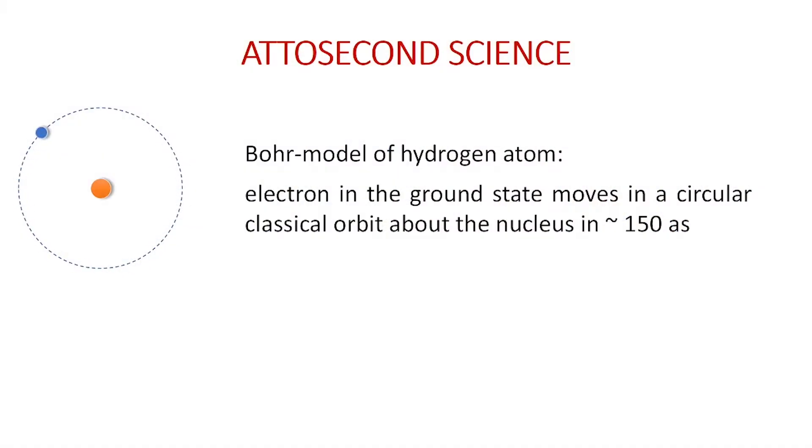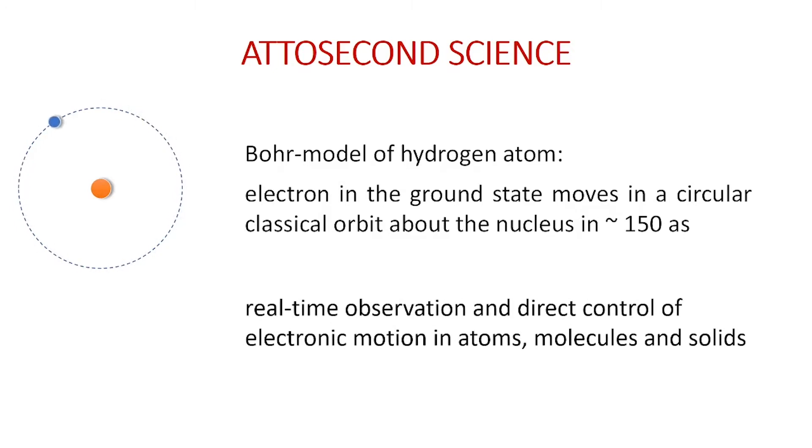For instance, in the Bohr model of the hydrogen atom, the electron rotates around the nucleus with a period of 150 attoseconds in the ground state. So attosecond pulses allow the real-time observation and even control of electron dynamics in atoms, molecules, and solids.